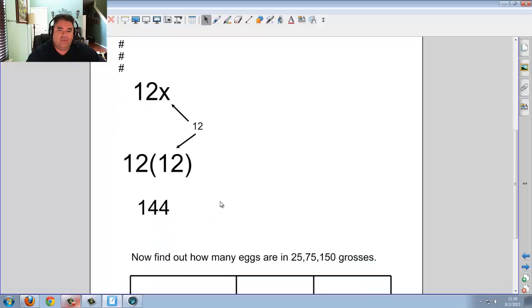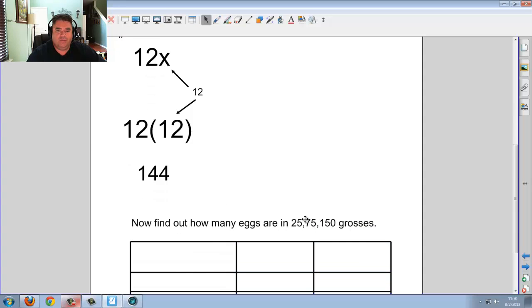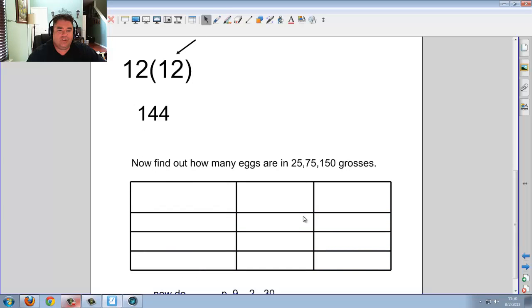Now go ahead and find out how many eggs are in 25, 75, or 150 grosses. Hint. You can actually start with 144x. Why 144x? Because there's 144 eggs in one gross. So go ahead at this time. Pause. All right. Let's see how you did.